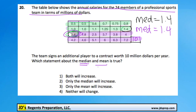Now looking at the mean — because this additional player is worth $10 million, which is more than any other person, that means the mean has to increase. If this person were worth, say, $0.1 million, that would take the average down. So in the end, only the mean is going to increase; the median is staying the same.